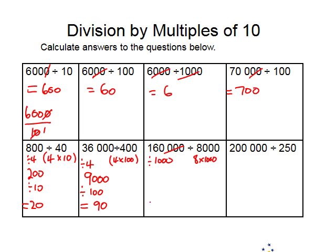Divide by 1,000 remove three zeros gives 160. And then we can divide by 8 which gives the answer of 8 goes into 16 twice so the answer is 20.